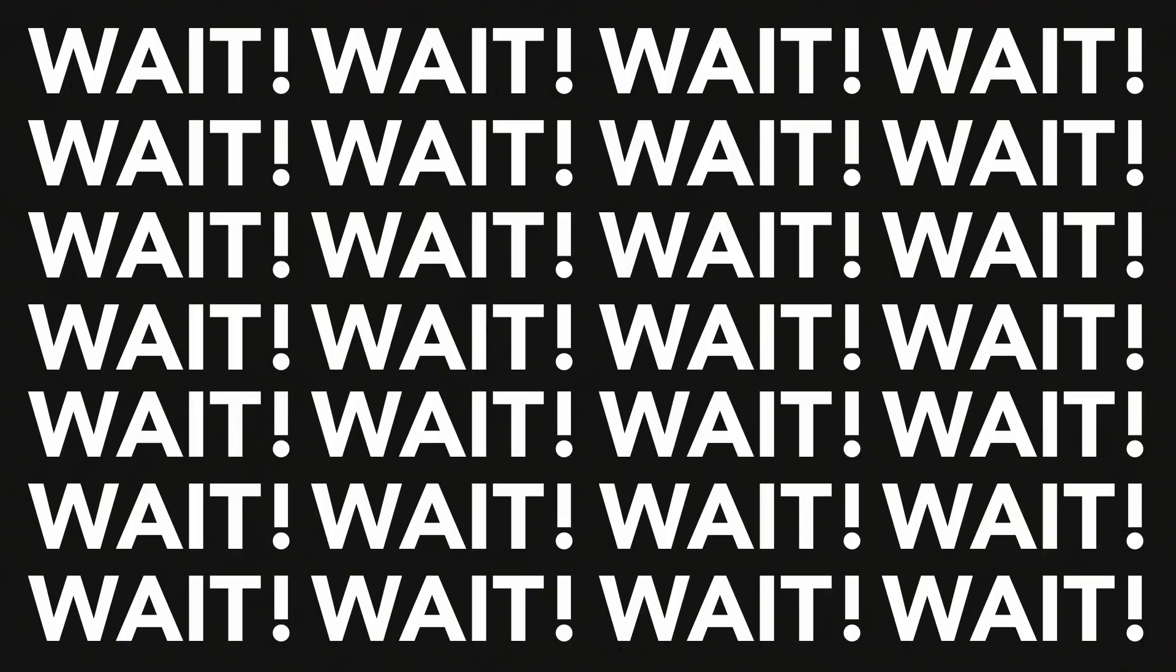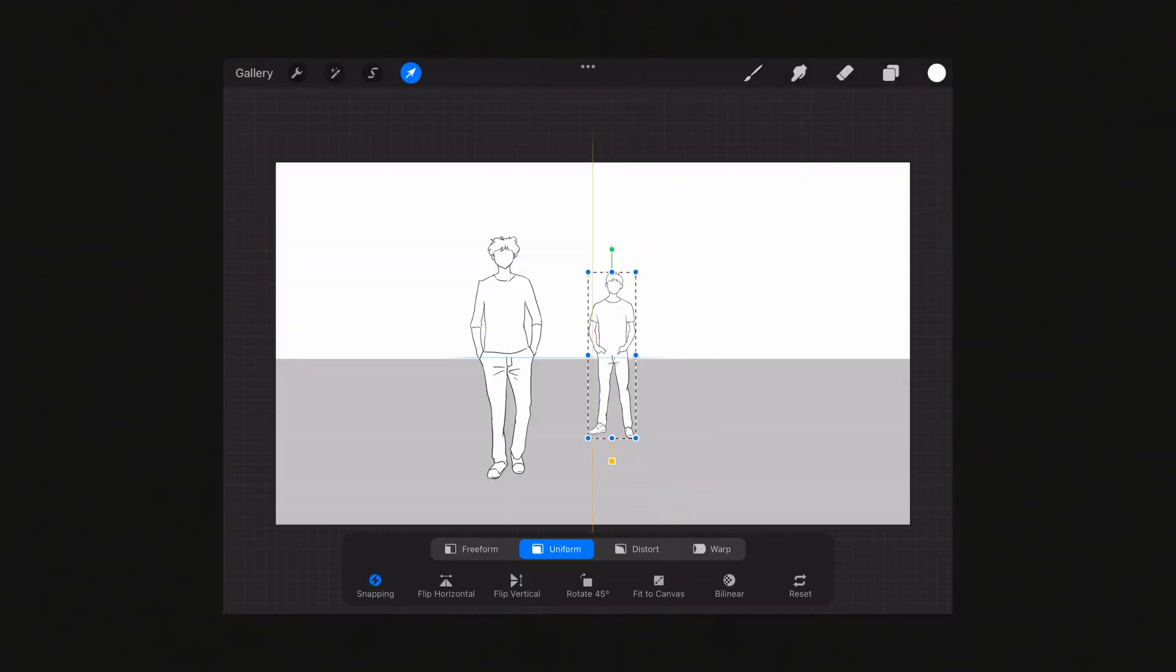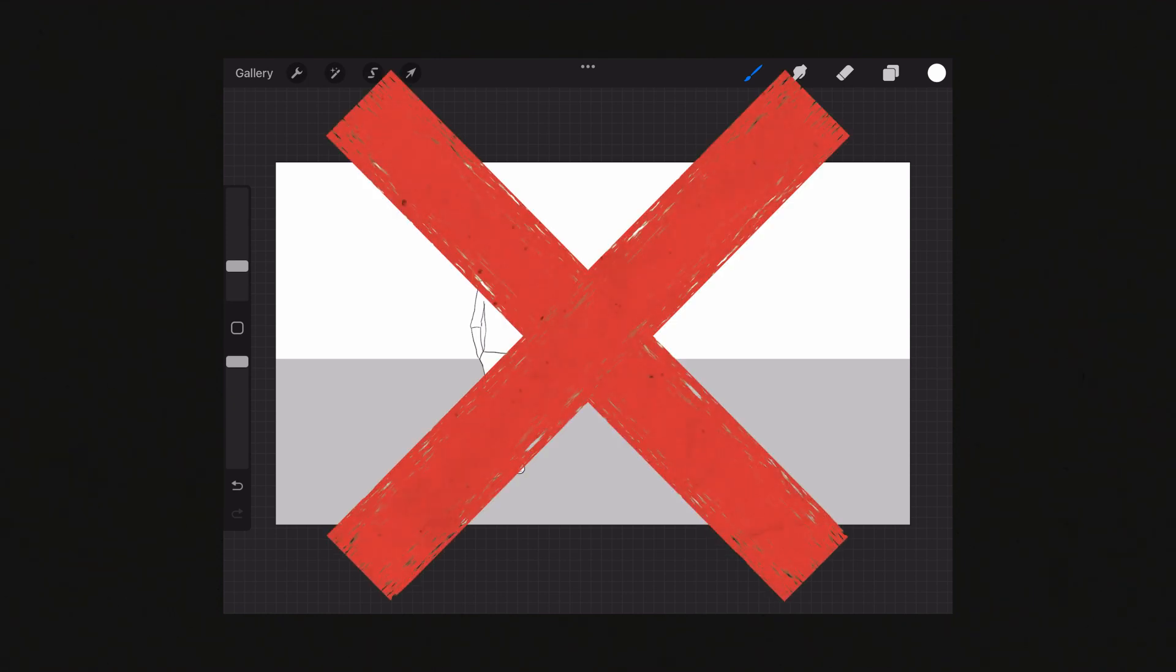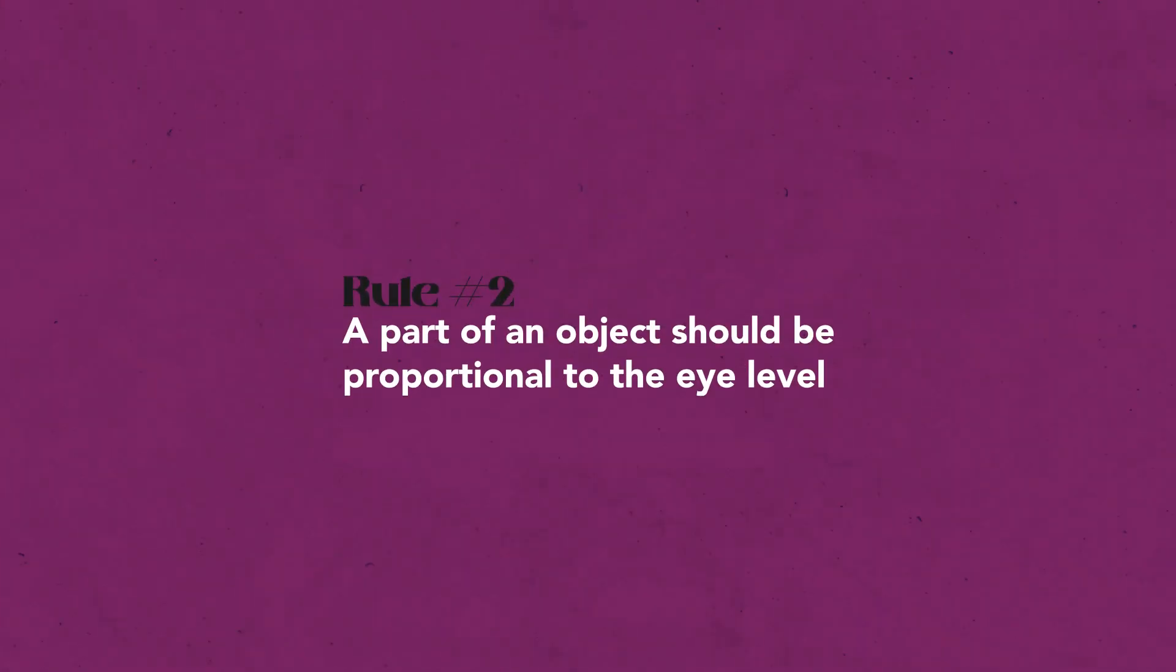Wait, I know what you're thinking. That's very obvious—just draw something and make them smaller, and that's it. Well, this is a wrong example of perspective, and that is because of our second rule, which is: a part of an object should be proportional to the eye level.